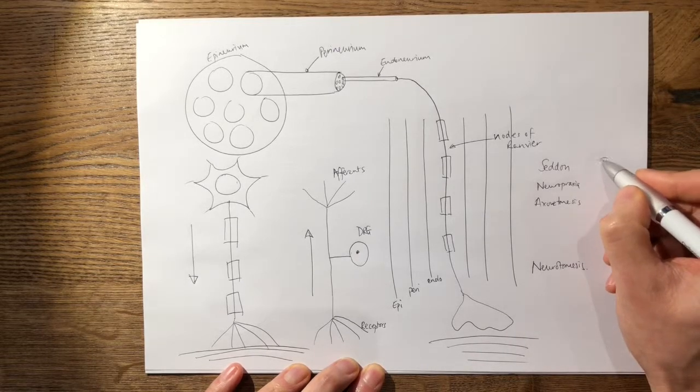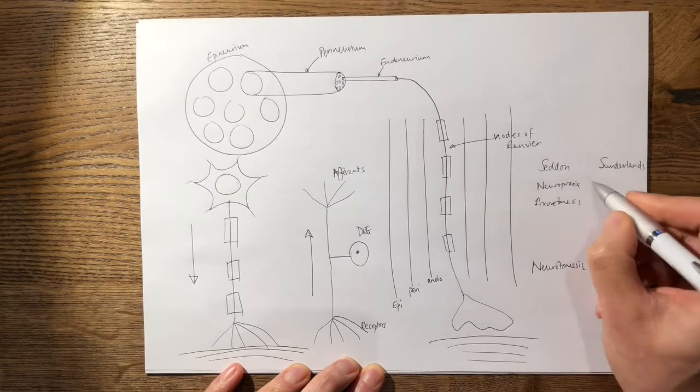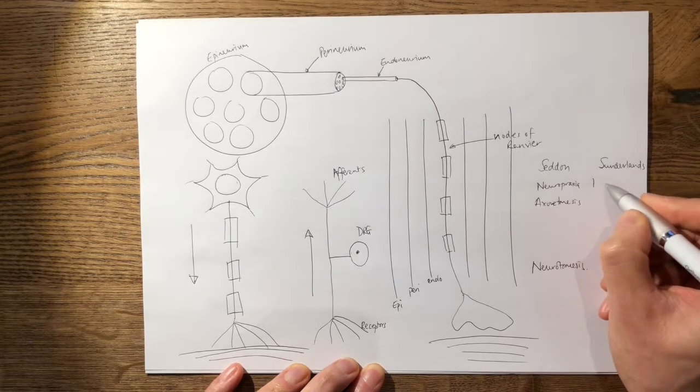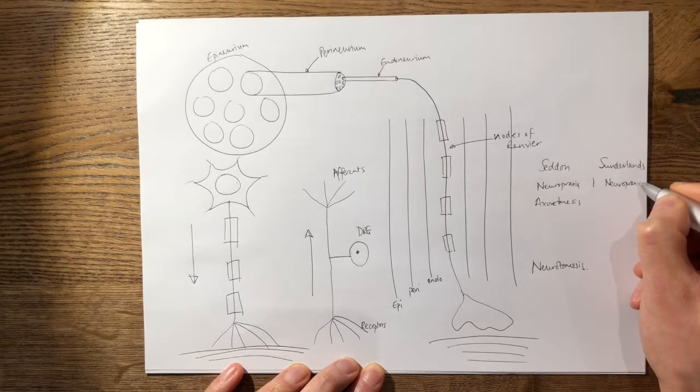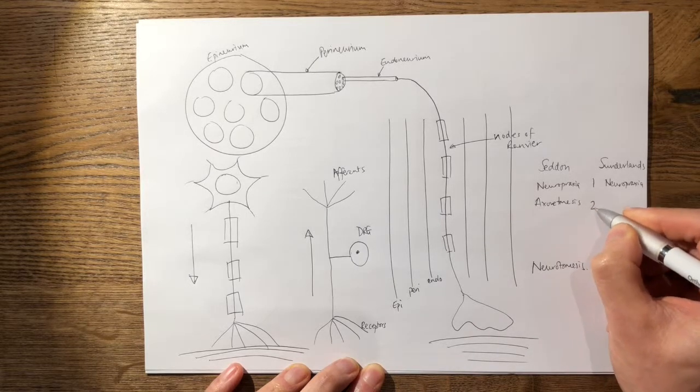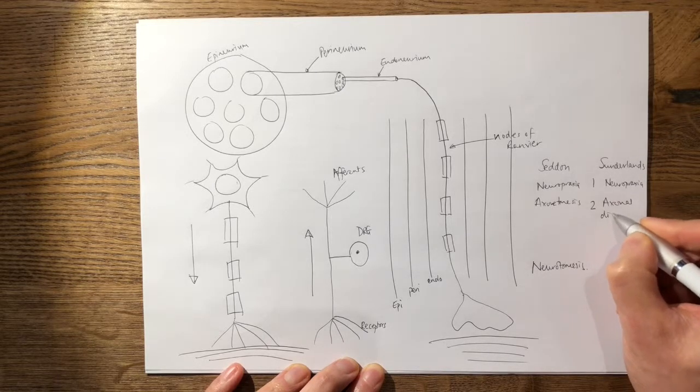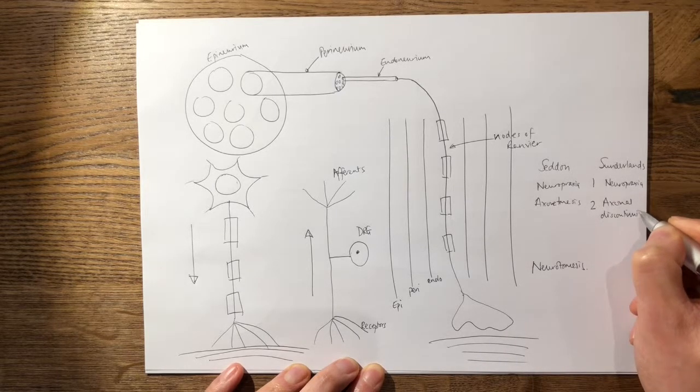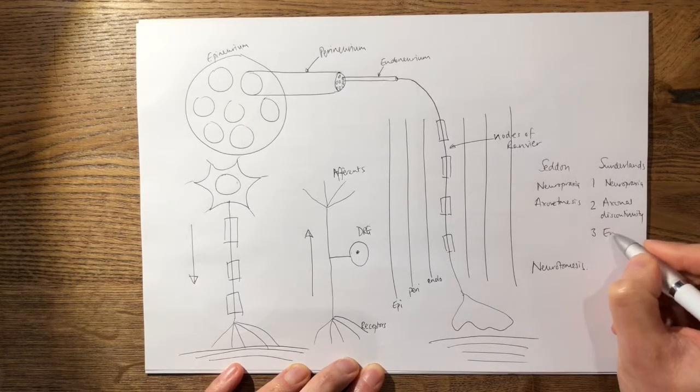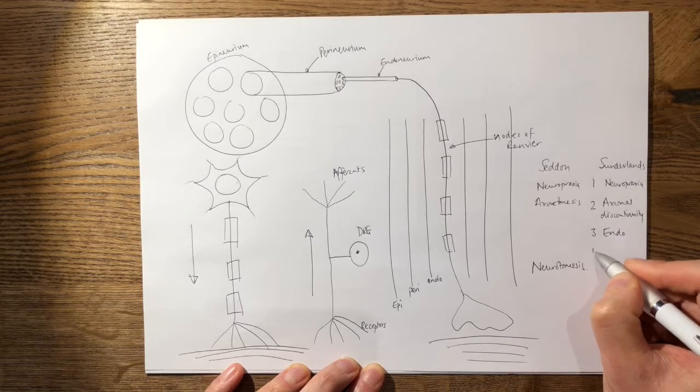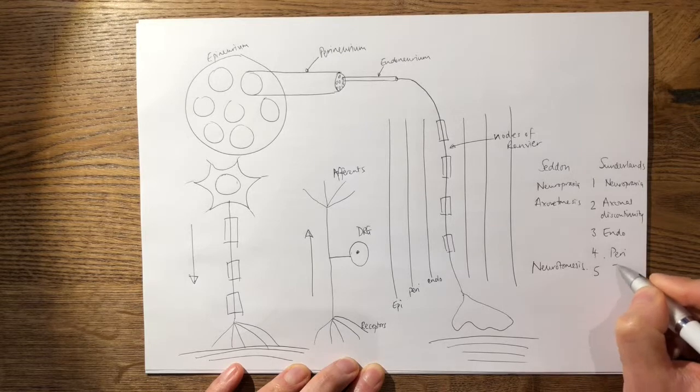Sunderland, however, is a bit more involved and has five parts to it. Number one is a neuropraxia. Number two, a Sunderland two, is axonal discontinuity. Sunderland three involves the endoneurium. Sunderland four involves the perineurium. And Sunderland five involves the epineurium.